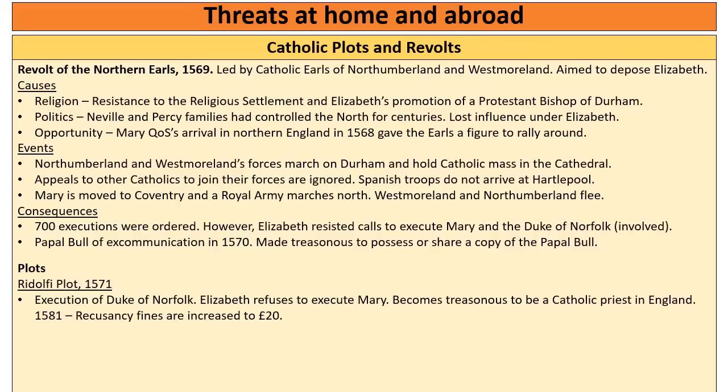However, Elizabeth again refuses to execute Mary, even though her Privy Council pressures her strongly to do so. She believes monarchs have been appointed by God and that she would be setting a dangerous precedent by executing a fellow monarch. After this plot, even more action was taken against Catholics — if you were a Catholic priest in England, it became treason, the punishment being hanged, drawn and quartered.